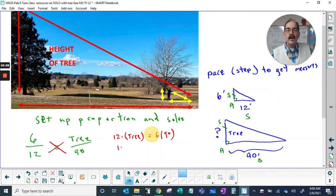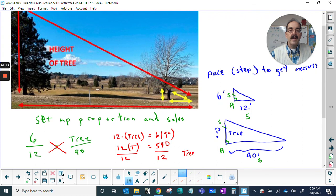Twelve T equals 540. Divide by twelve, divide by twelve, and lo and behold, the tree is 45 feet.